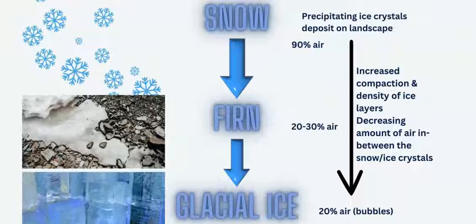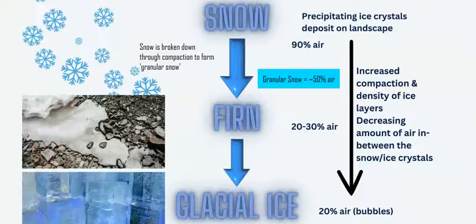The weight of the overlying snow creates that compaction and a change in density. What happens is the snow crystal and ice crystal will break down and become smaller — an increase in density in a smaller volume — and it will turn into granular snow: smaller and less crystalline in shape. It will then recrystallize.